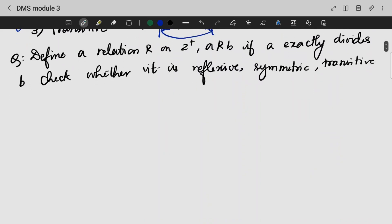Let's look into a question. Define a relation R on Z plus: a related to b if a exactly divides b. Check whether it is reflexive, symmetric and transitive.